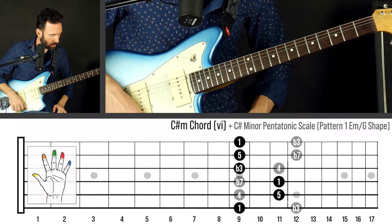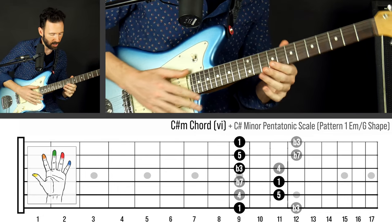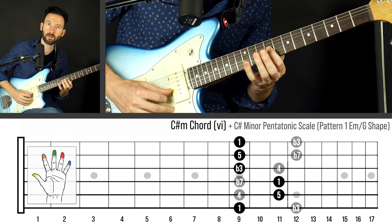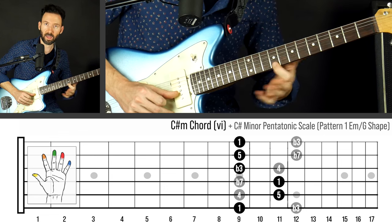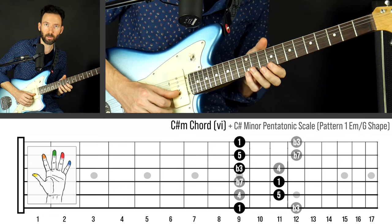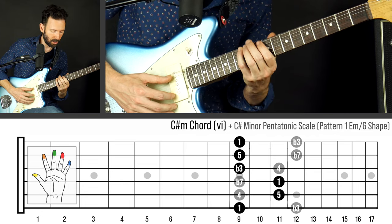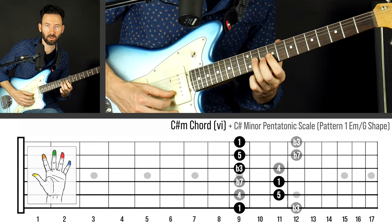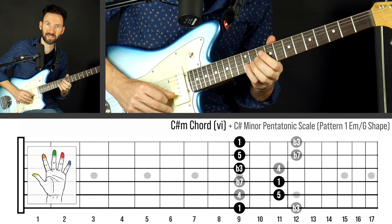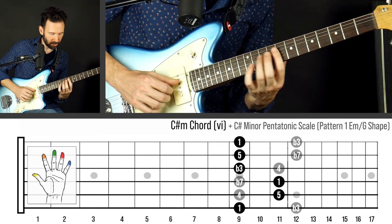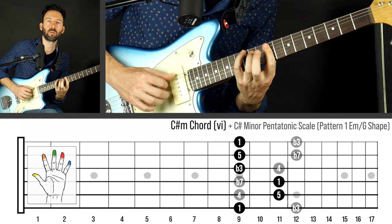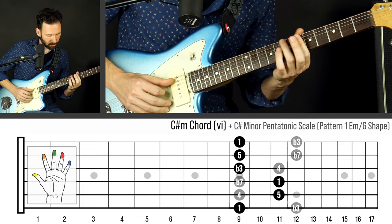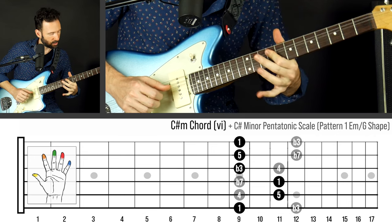So the intervals that you see are just the intervals of the chord. On the C-sharp minor, this is the root of the chord, the fifth, the root, the flat third, the fifth, and the root again. And then these are the pentatonic tones: root, flat third, fourth, fifth, flat seven, root, flat third, fourth, fifth, flat seven, root, flat third. So these are always available as tones that you could use to embellish. That's what John's doing there.